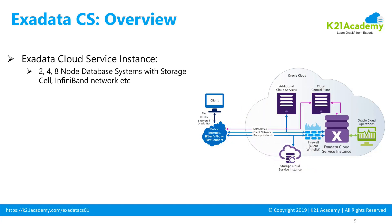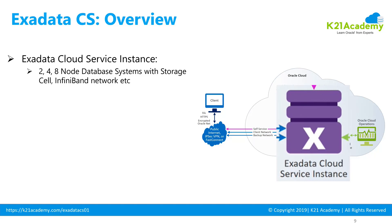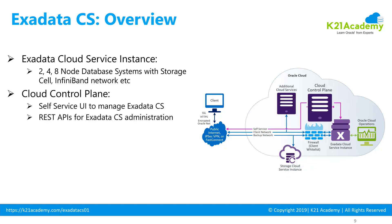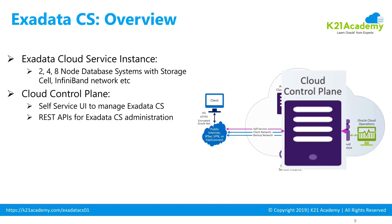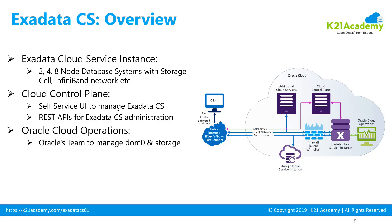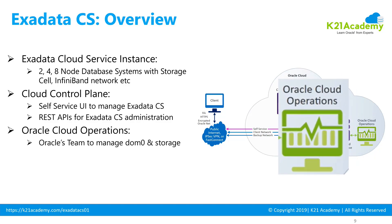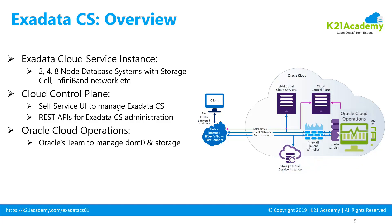To do a quick recap: you have the Exadata Cloud Service instance consisting of two, four, or eight node database systems with storage cells and InfiniBand network. Then you have a control plane used as a self-service user interface by you as the Exadata admin to manage Exadata Cloud Service. Then you have Cloud Operations used by Oracle's team to manage the hardware, firmware, and the DOM0 part of Exadata Cloud Service.